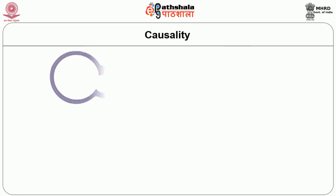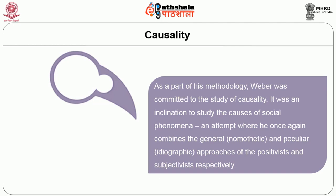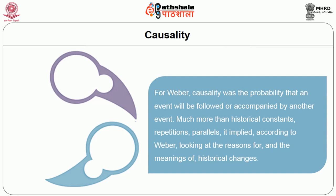Causality. As a part of his methodology, Weber was committed to the study of causality — an inclination to study the causes of social phenomena — combining the general nomothetic and peculiar ideographic approaches of the positivist and subjectivist respectively. For Weber, causality was the probability that an event will be followed or accompanied by another event, much more than historical constants, repetitions, and parallels. It implied looking at the reasons for and the meaning of historical changes.